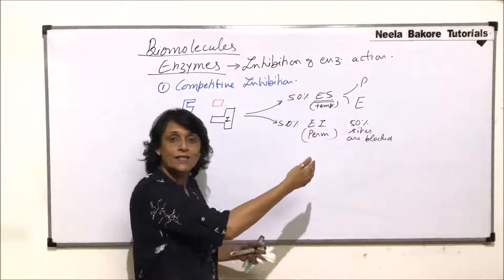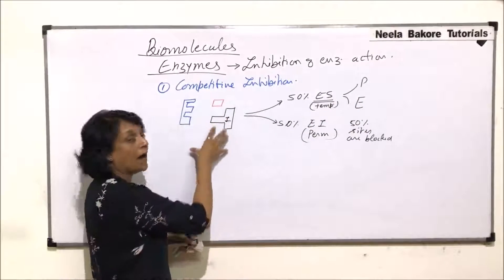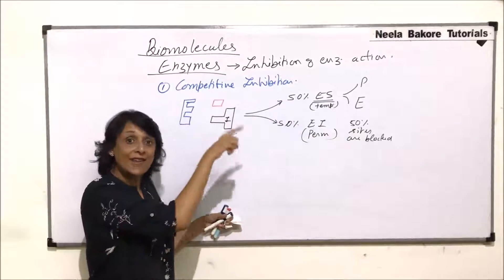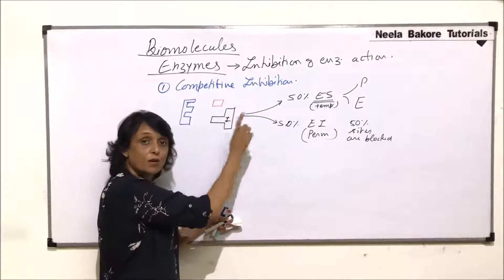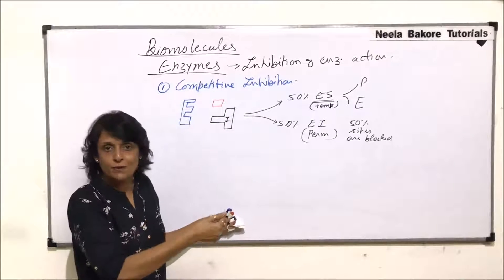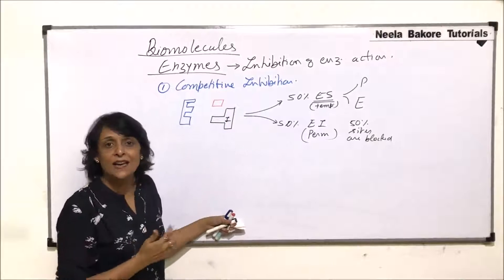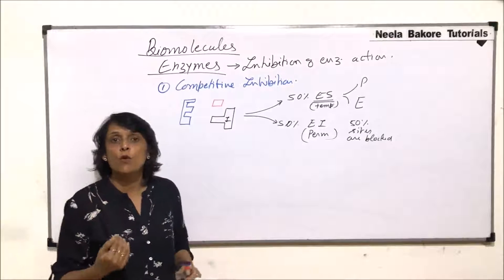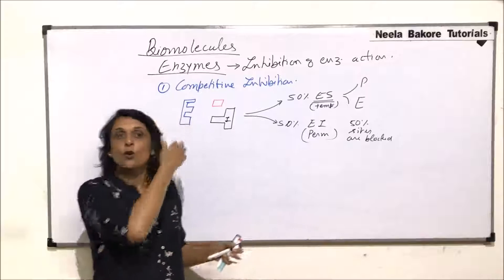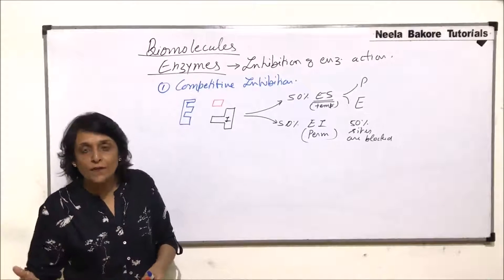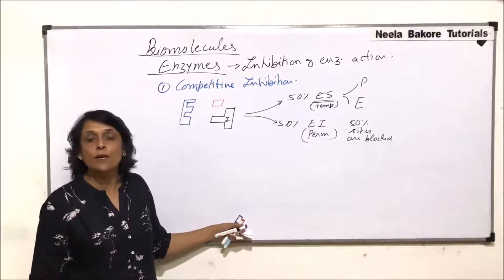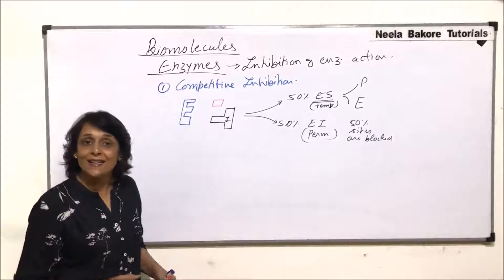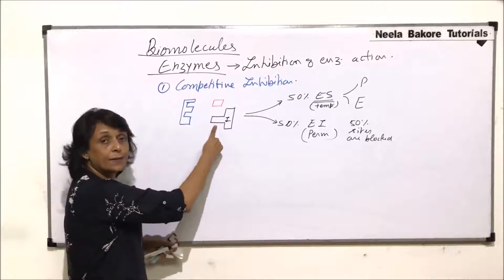So product formation has reduced by 50%. If we go one step beyond this, only 50% of active sites are now available. Out of the remaining substrates and inhibitors, again 50% of those sites bind substrate and 50% bind inhibitor — so 25% substrate binds and 25% inhibitor binds, permanently blocking those 25% of sites. Product formation goes down by another 25%. So first it drops by 50%, then 50% of that, then 50% of that — slowly the product concentration goes on decreasing and enzymatic action is reduced.